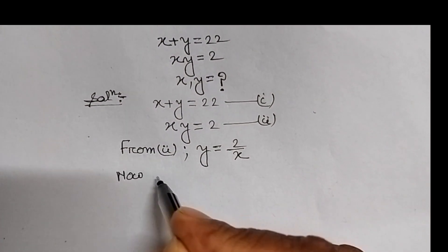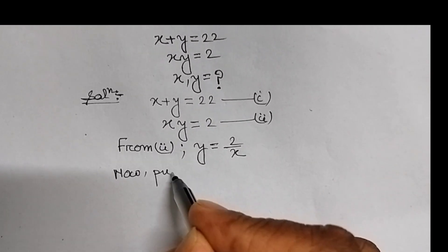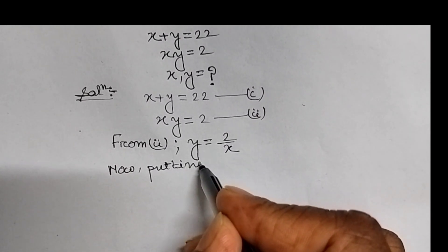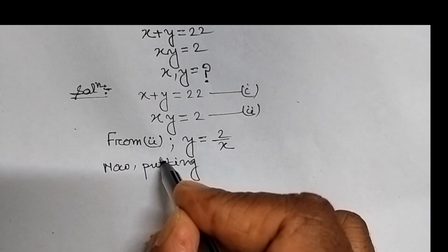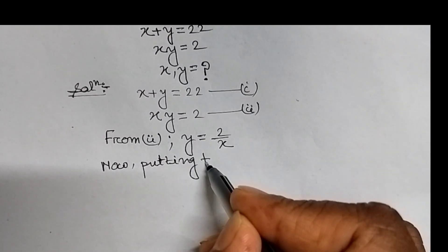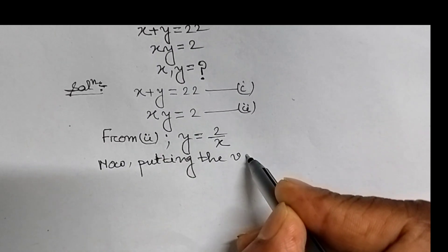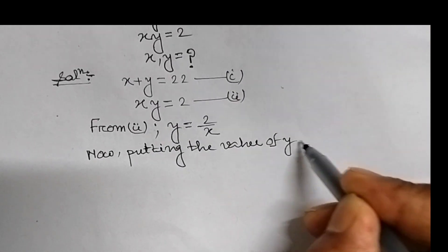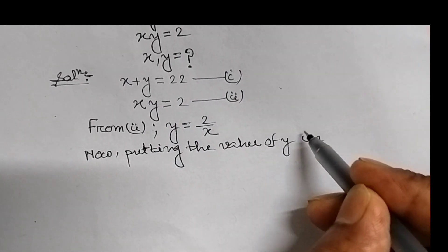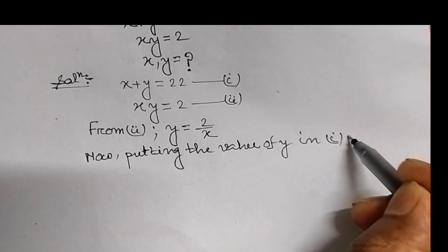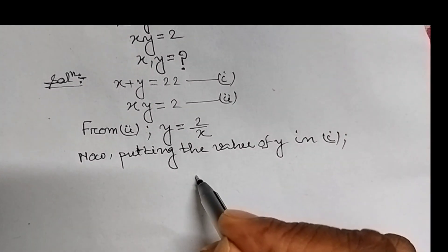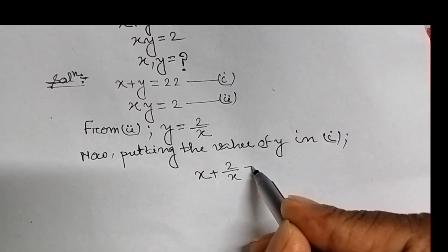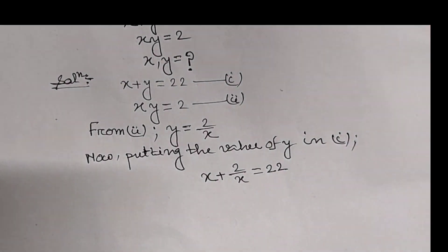Now, putting the value of y into equation 1, we get x plus 2 upon x equal to 22.